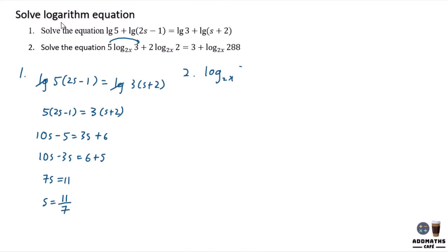So what I do is log 2x 3 power 5 plus log 2x 2 power 2 minus log 2x 288 equal to 3. Since they are the same base, you can actually combine them.